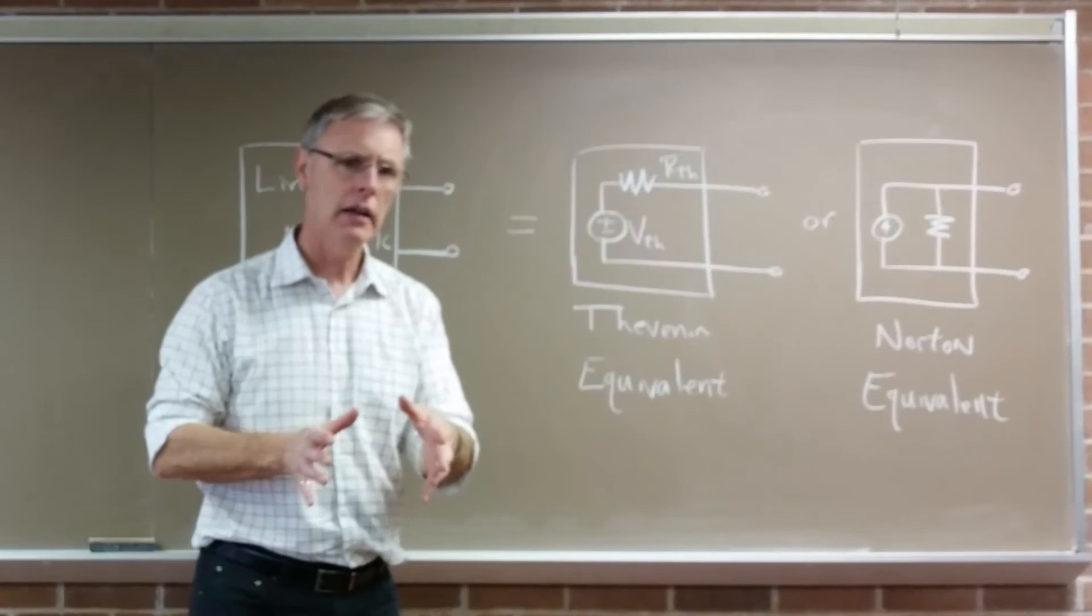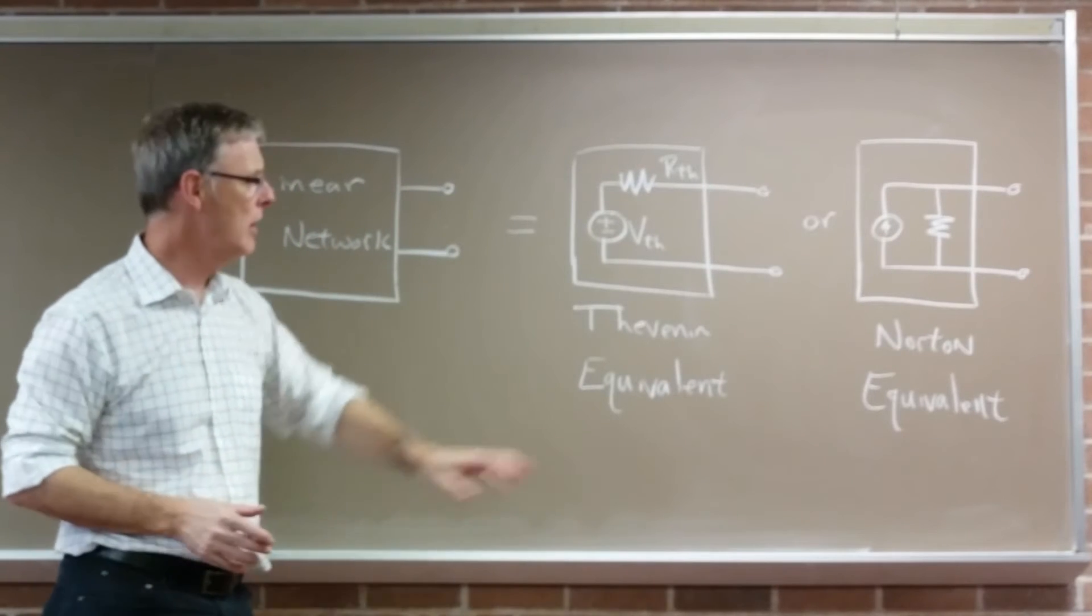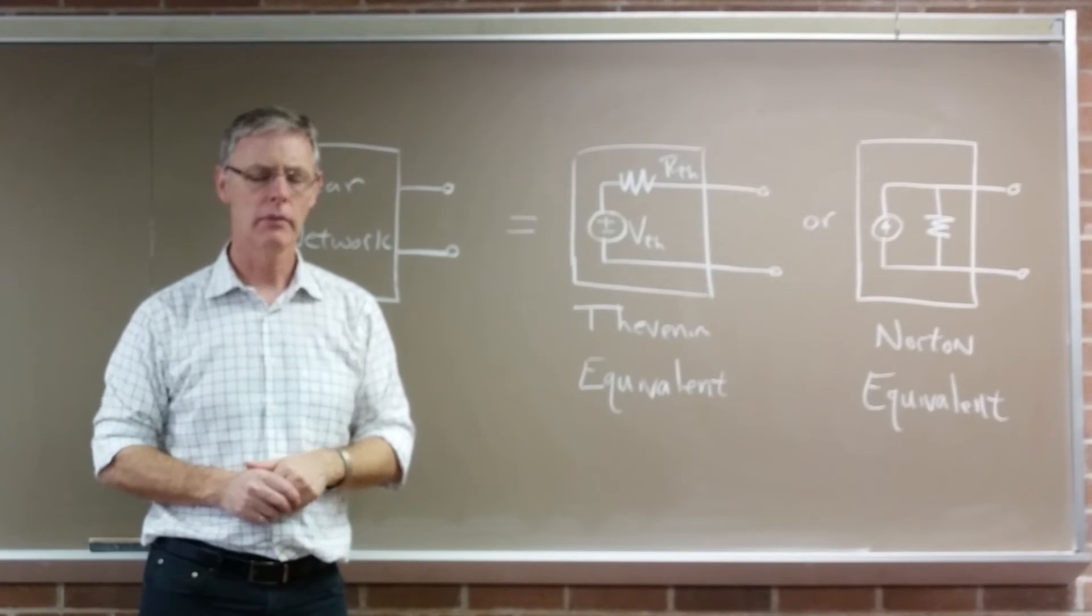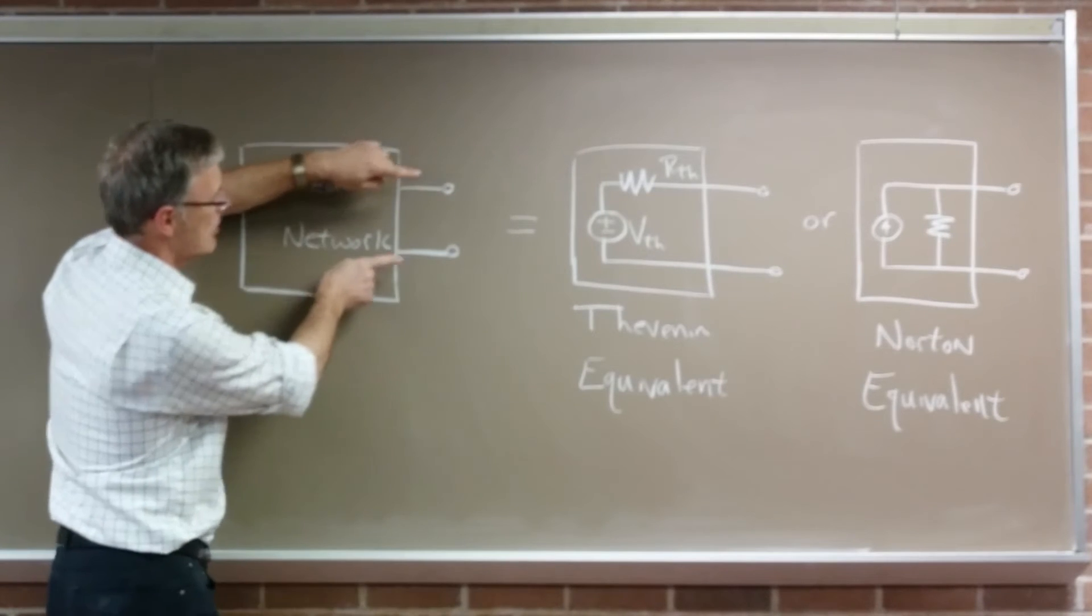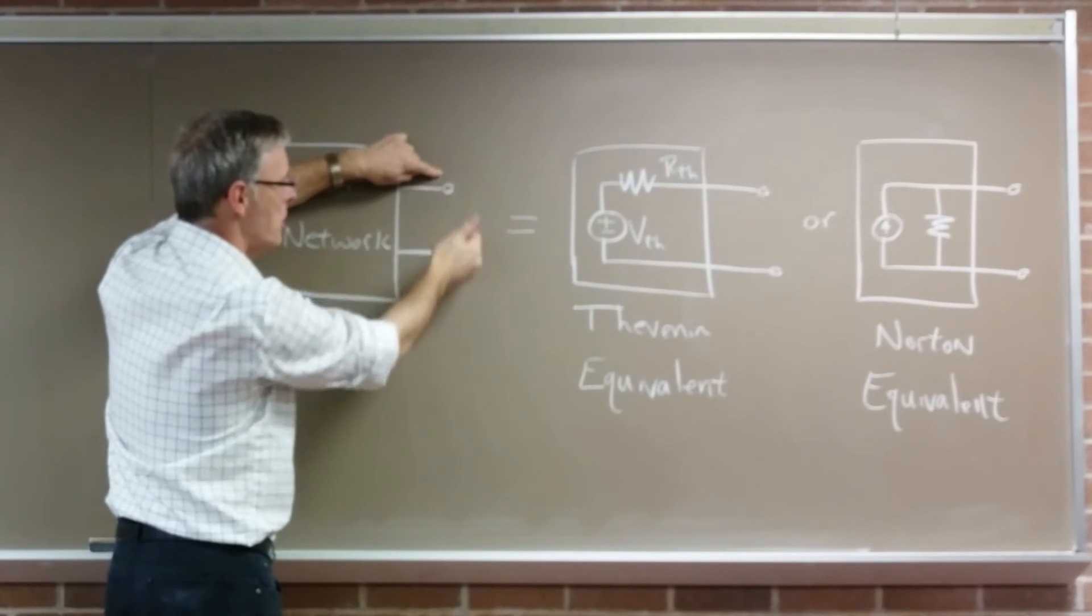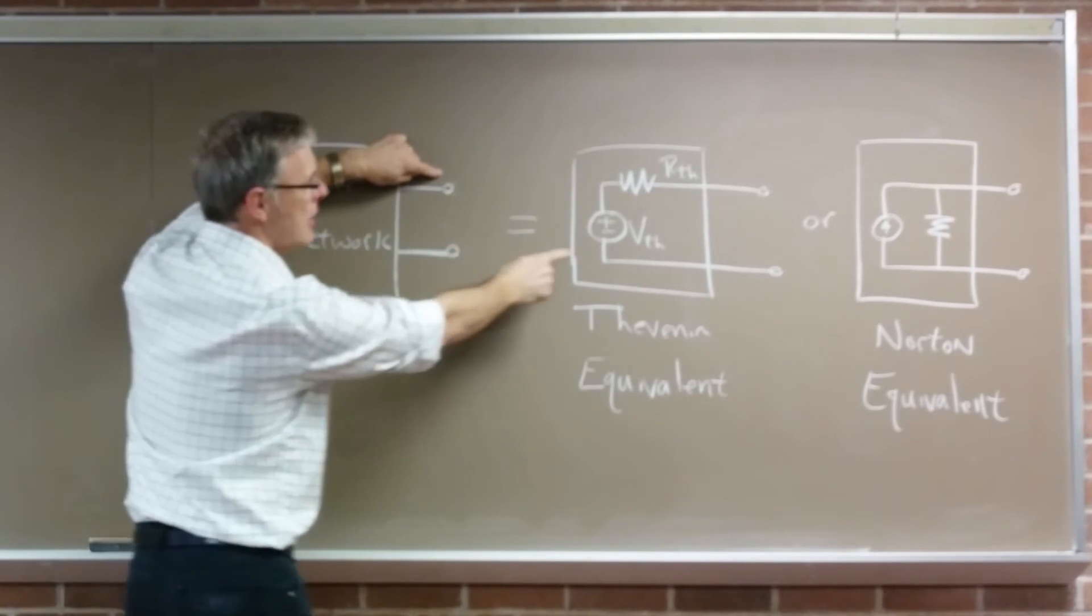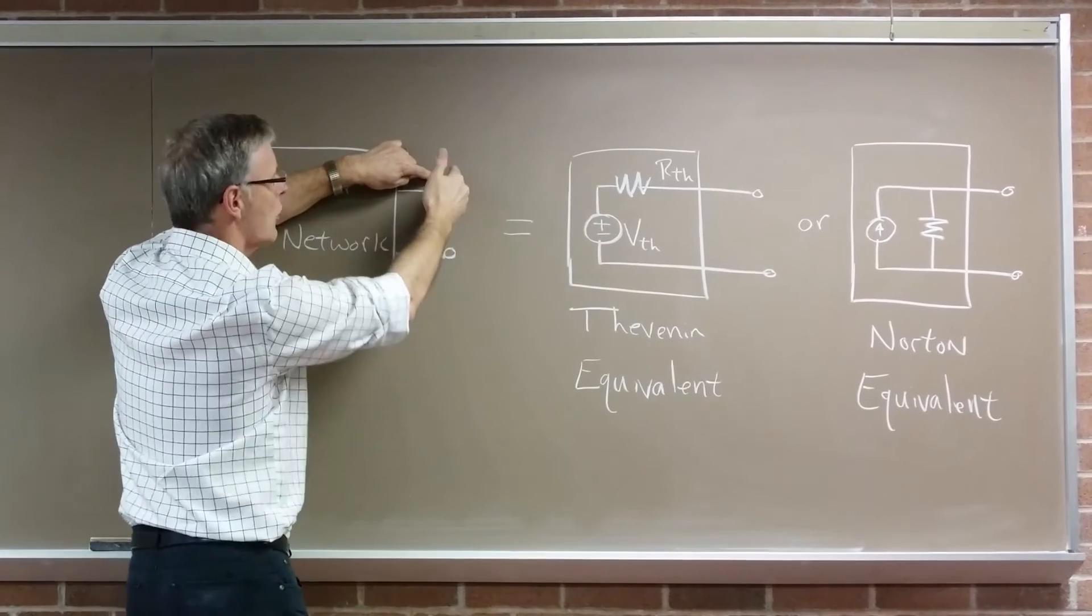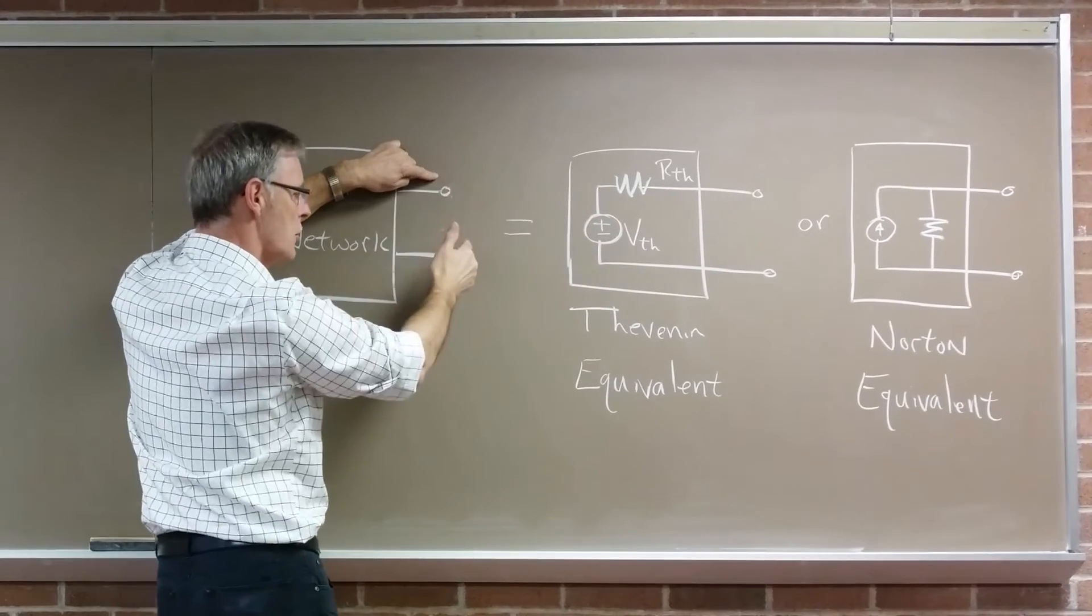Today, you will be trying to determine the Thevenin equivalent of a given network. The way you do that is you have a pair of terminals, and those terminals can be open-circuited, and you measure the open-circuit voltage. That gives you the voltage source for your Thevenin equivalent. You put a short circuit across those terminals and you measure the short-circuit current.